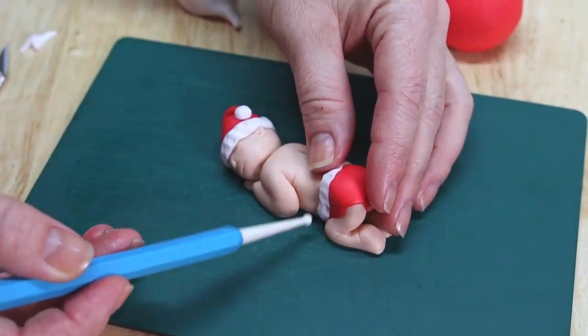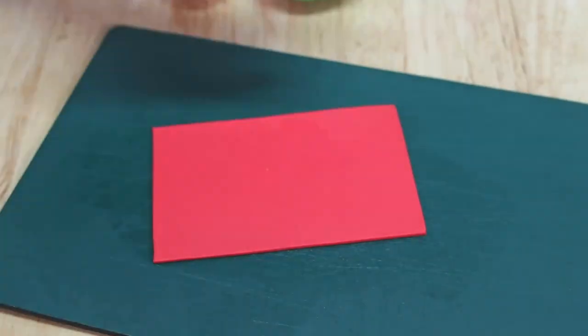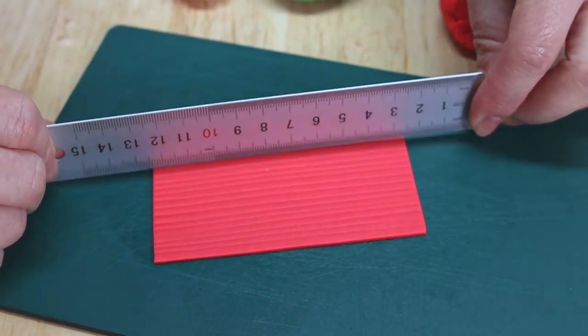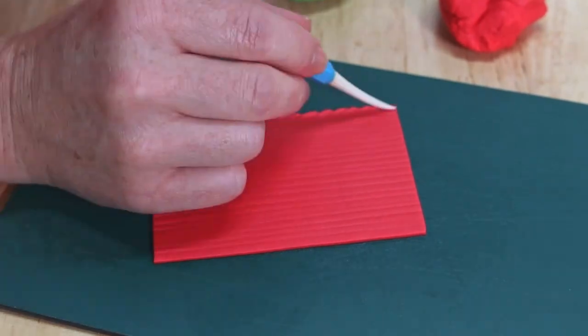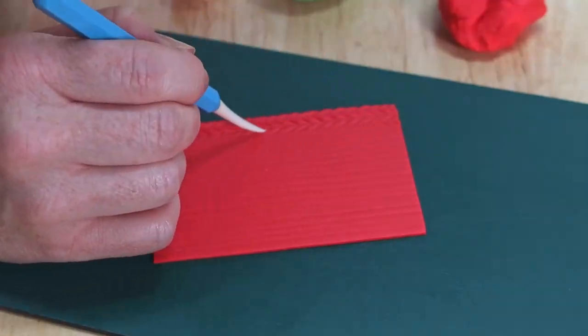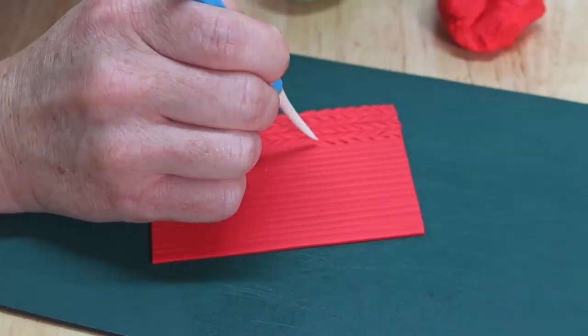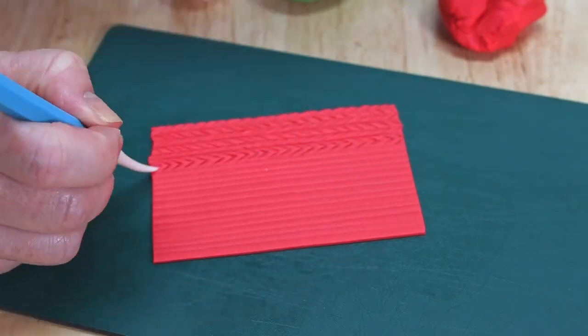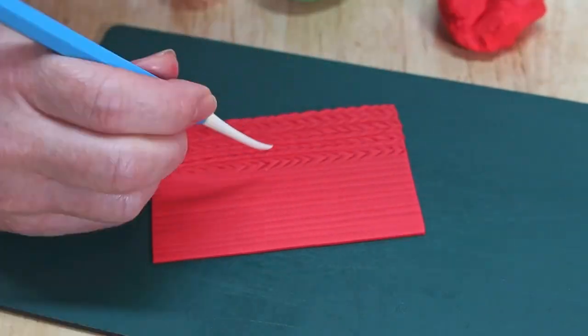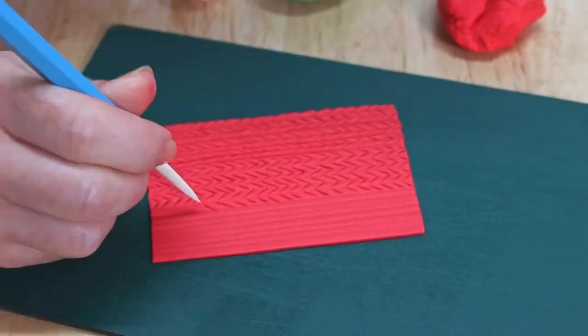We have completed our Santa baby and I think he turned out super sweet. But now we're going to move on to his little blanket and this one's actually really simple and works up fairly quickly. So I've rolled out a piece of red quite thinly, I've used my ruler to mark off the lines of where I want the pattern to be, and now I'm using a Dresden veining tool to mark off sort of a chevron pattern which I'm going to connect with some lines to make it look a little bit more like a knitted blanket for the baby.